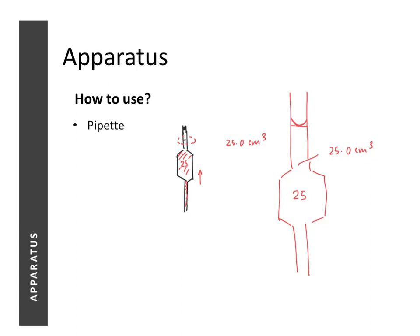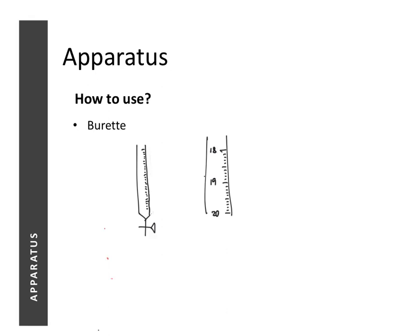Pipettes can only be used to measure fixed volumes of solution, which is reflected on the pipette itself — for example, 25. To suck the solution up, we use something called a pipette filler. By pressing a certain button on the pipette filler, we can suck the solution up the pipette. You will get a chance to use it in the lab. The last instrument to measure volumes of liquid is a burette. A burette has a tap at the bottom — when we open the tap the liquid flows out, when we close it the flow stops. At the top of the burette the reading is zero, and at the bottom it reads 50, so the maximum volume we can measure is 50 centimetre cubed.